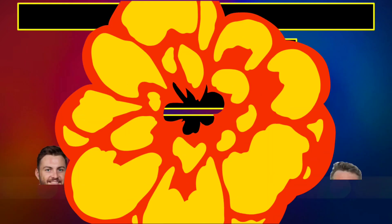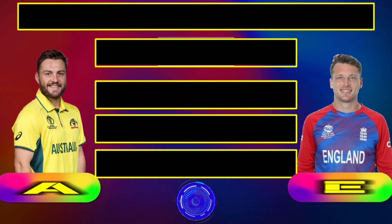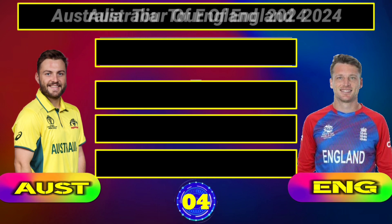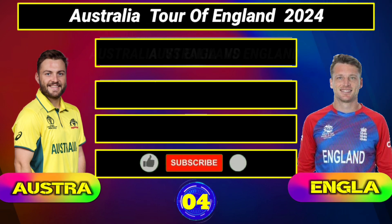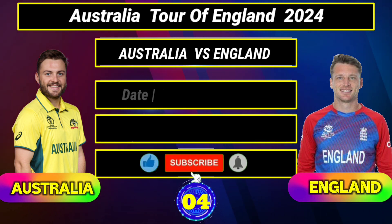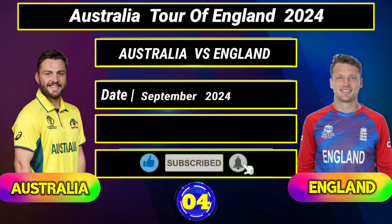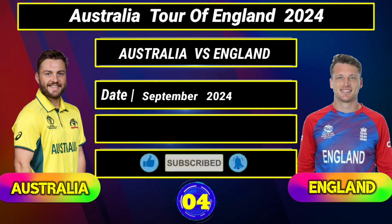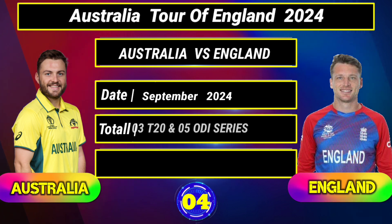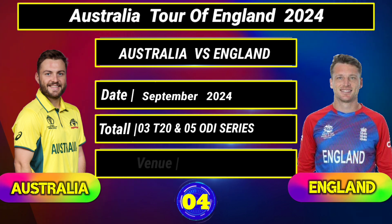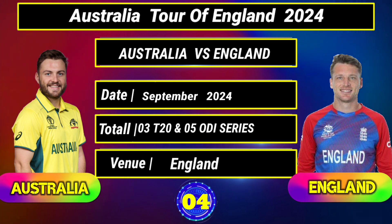England upcoming series number 4: Australia Tour of England 2024. Australia vs England, starting date September 2024, total matches: 3 T20 and 5 ODI series. Venue: England.